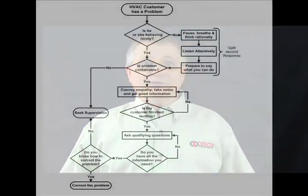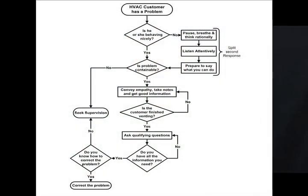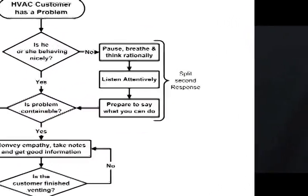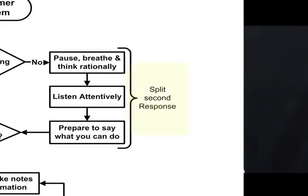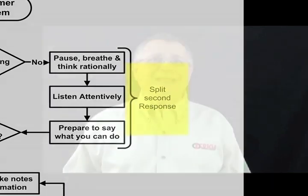Some flowcharts also include annotations, which elaborate on that particular step of a process. There are a variety of different shapes that flowcharts can use, and I use some of the most common ones.